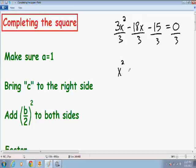Negative 18x over 3 is just negative 6x. Negative 15 over 3 is negative 5. And 0 over 3 is just 0. So moving on to our next step.